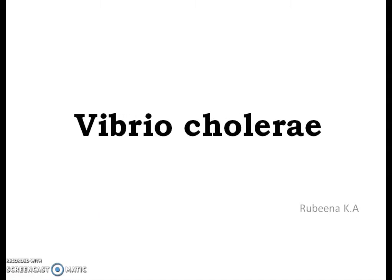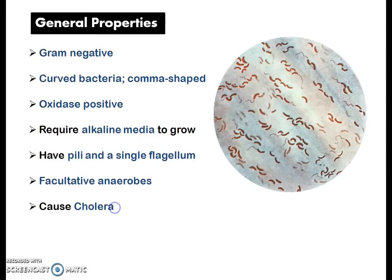Today we will be learning about Vibrio cholerae. Coming to the general properties, they are gram-negative organisms and their peculiar feature is that they are curved, comma-shaped bacteria, as you can see in the picture given. They are oxidase positive and they require alkaline media to grow.